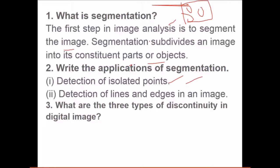What are the three types of discontinuity in digital image? You have point, line, and edges. So these are edges, these are points, these are lines. These are the discontinuities.